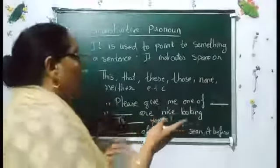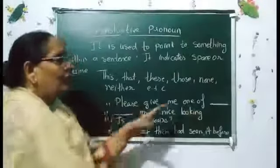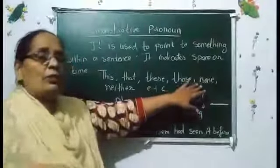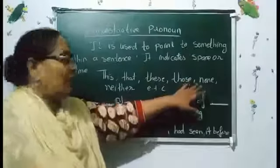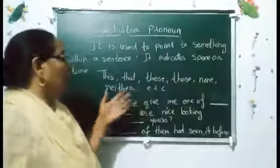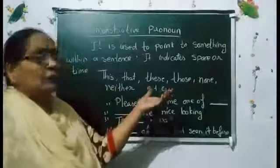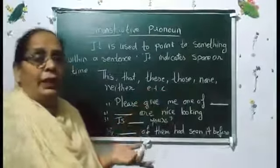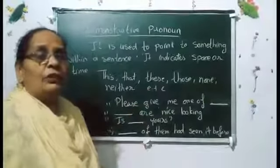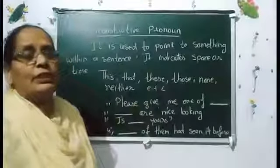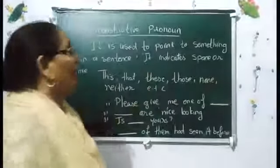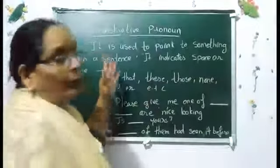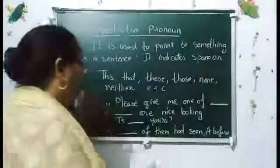If none among many things is chosen, we say 'neither.' If none of them have done something, we say 'none' or 'none of them.' For example: 'Neither of them had done this.' This is how demonstrative pronouns work.